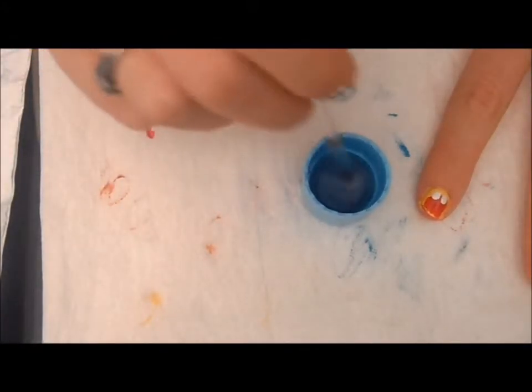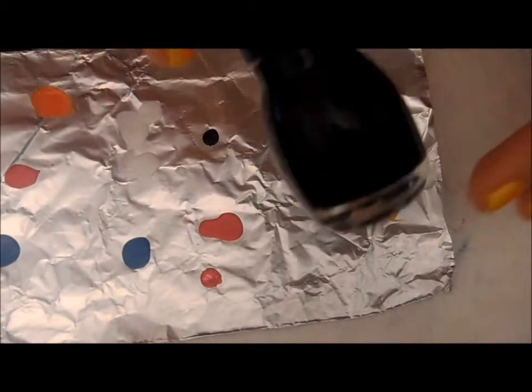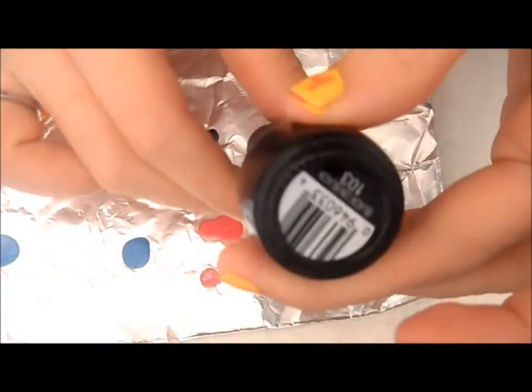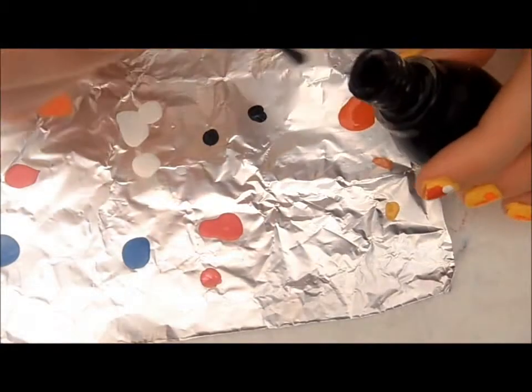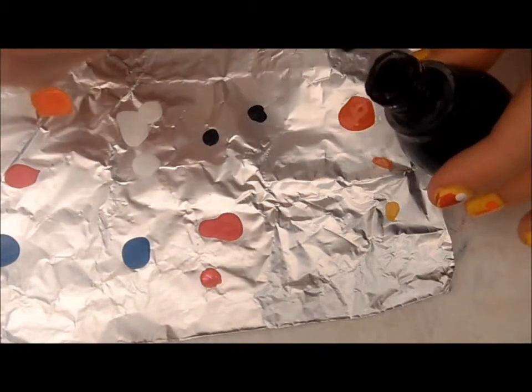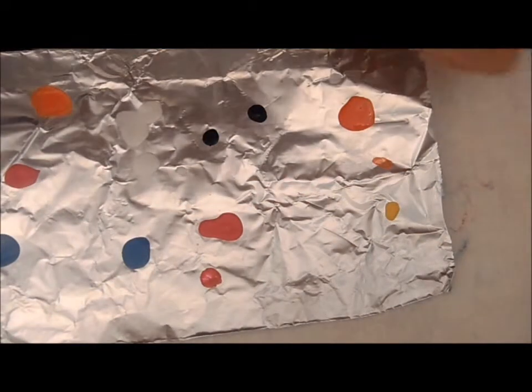Clean your brush off. Very carefully, get a blob of black. I'm using Sinful Colors Black on Black, 103. You're going to need enough to do both of their mouths and the dots in their eyes, their little pupils.